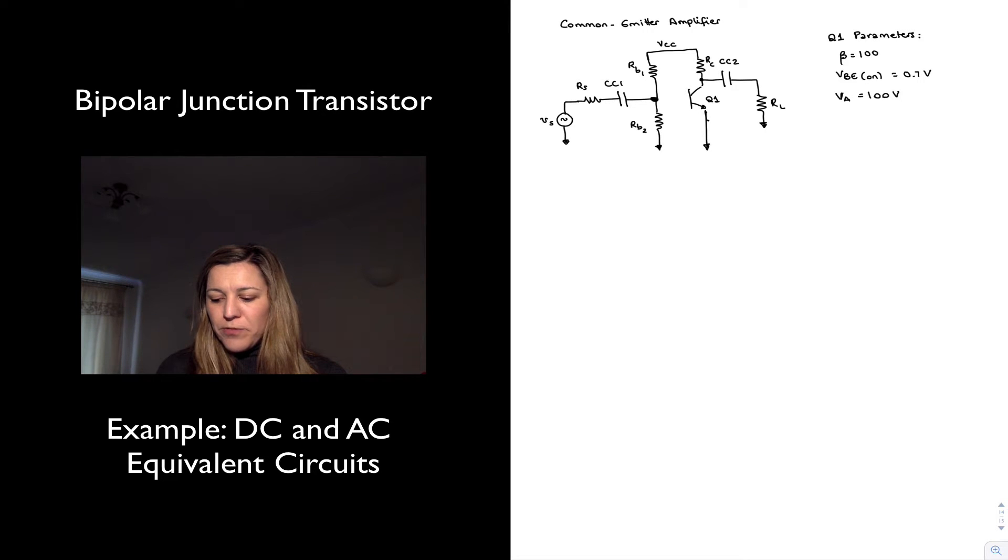So if you look at your workbook, the activity shows a common emitter amplifier and it gives us a few parameters for the transistor which I've labeled Q1. So beta equals 100, the turn on voltage for the base emitter junction is 0.7 volts and the early voltage is 100 volts. Pretty common values for small signal transistor.